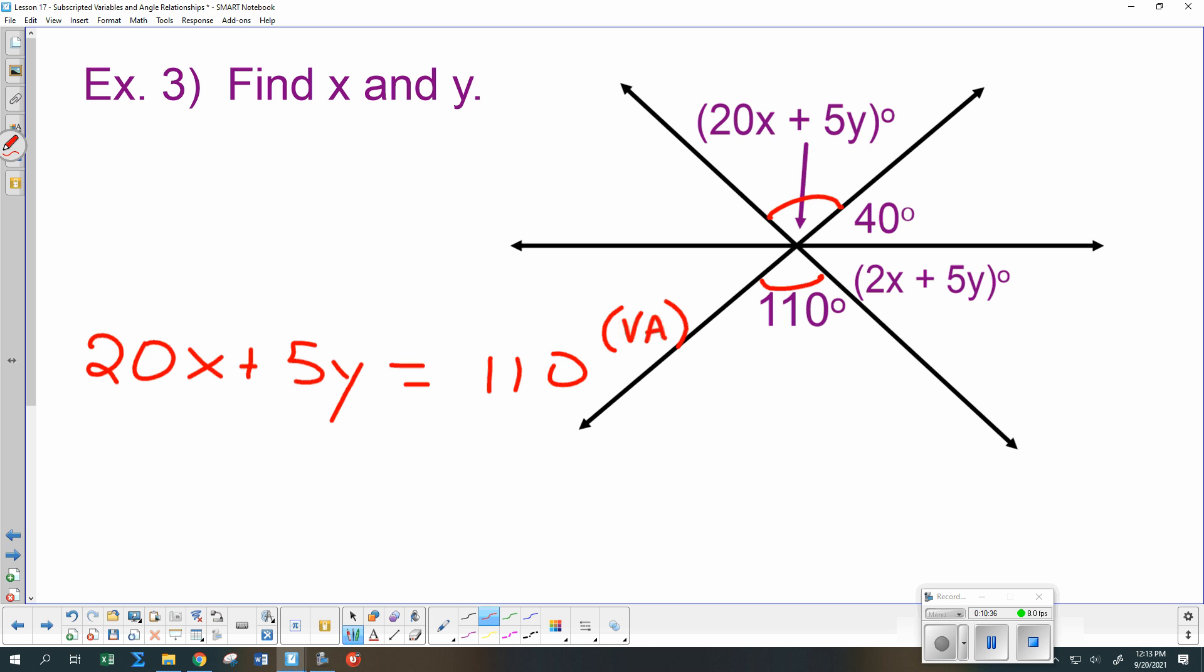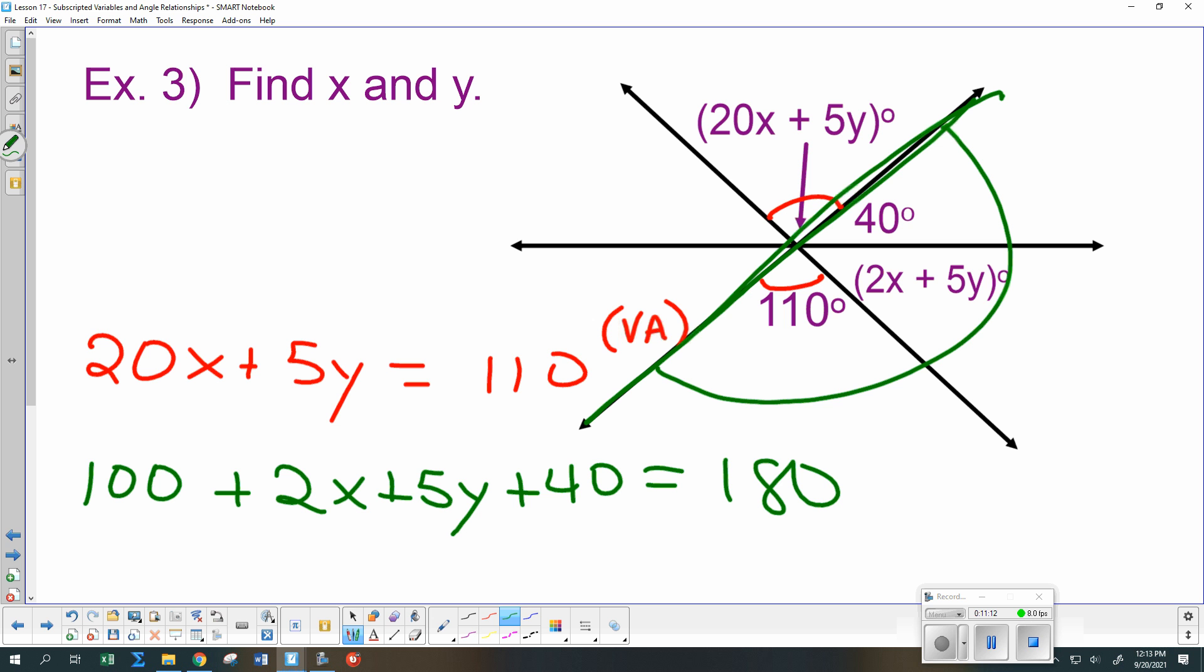Melissa? Okay, so Melissa is suggesting that if we put all three of these together, that makes 180. What do you guys think? Thumbs up, thumbs down. Does everybody see if we put those together, they line up and make this straight line right here? So we're going to write that down. We're going to write down if we take the 110 plus the 2x plus 5y plus the 40 and put all of those together, we know we have to get 180. Okay, they aren't supplementary angles because there's more than two, but they do line up to make a straight angle on the outside.